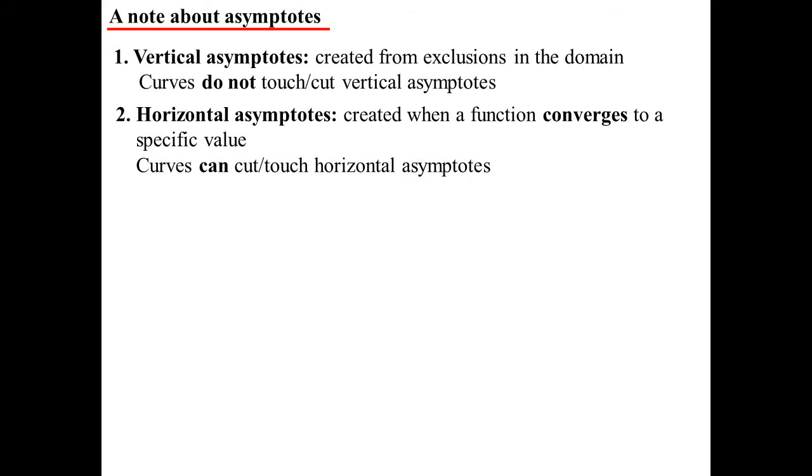Horizontal asymptotes. That's when the function converges to a specific value. Another way we found these would be now using limits. We could use the idea of limits to do that.